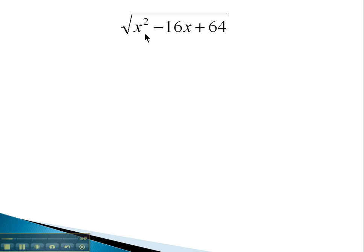In this problem, it's very tempting to try and take the square root of the three parts separately. The square root of x squared is x, the square root of 16 is 4, leaving the root x, and the square root of 64 is 8. However, this is incorrect and cannot be done.